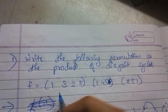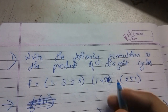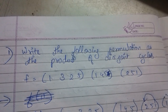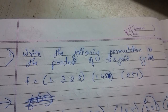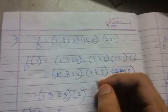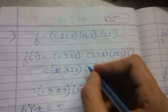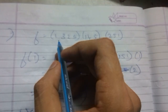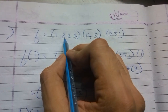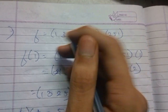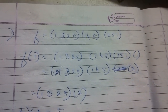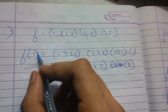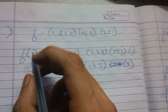We are doing the sum for the disjoint cycles. Here is the sum and here is the answer. For the elements 1, 2, 3, and 4, we have to write all the elements.